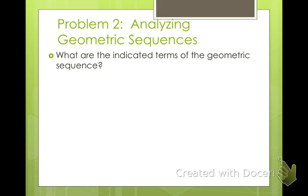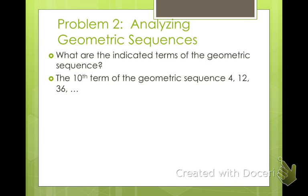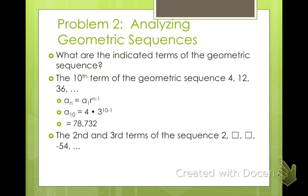Finding the indicated terms of a geometric sequence: find the 10th term of the sequence 4, 12, 36. To find a sub n, we use the explicit formula: a sub n = a sub 1 times r raised to the power of n minus 1. Our a sub 1 is 4. For the ratio: 12 divided by 4 is 3, and 36 divided by 12 is 3, so r = 3. We want the 10th term, so we compute 4 times 3 to the 9th power. Putting that in the calculator gives us 78,732.